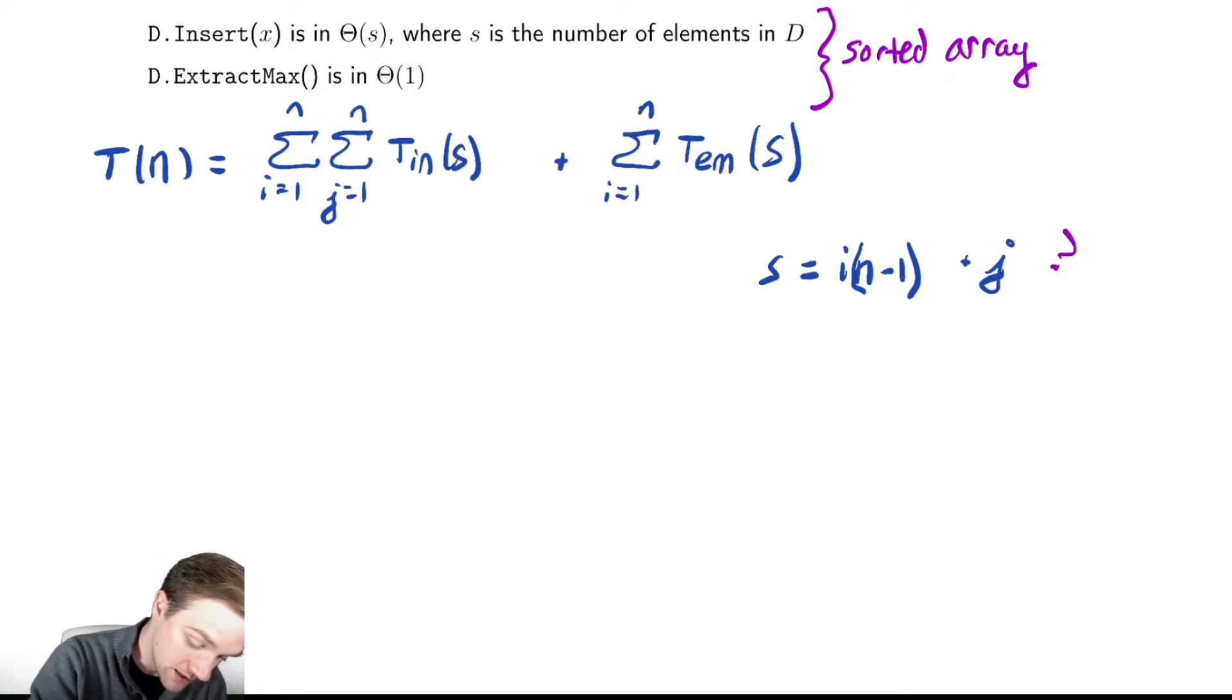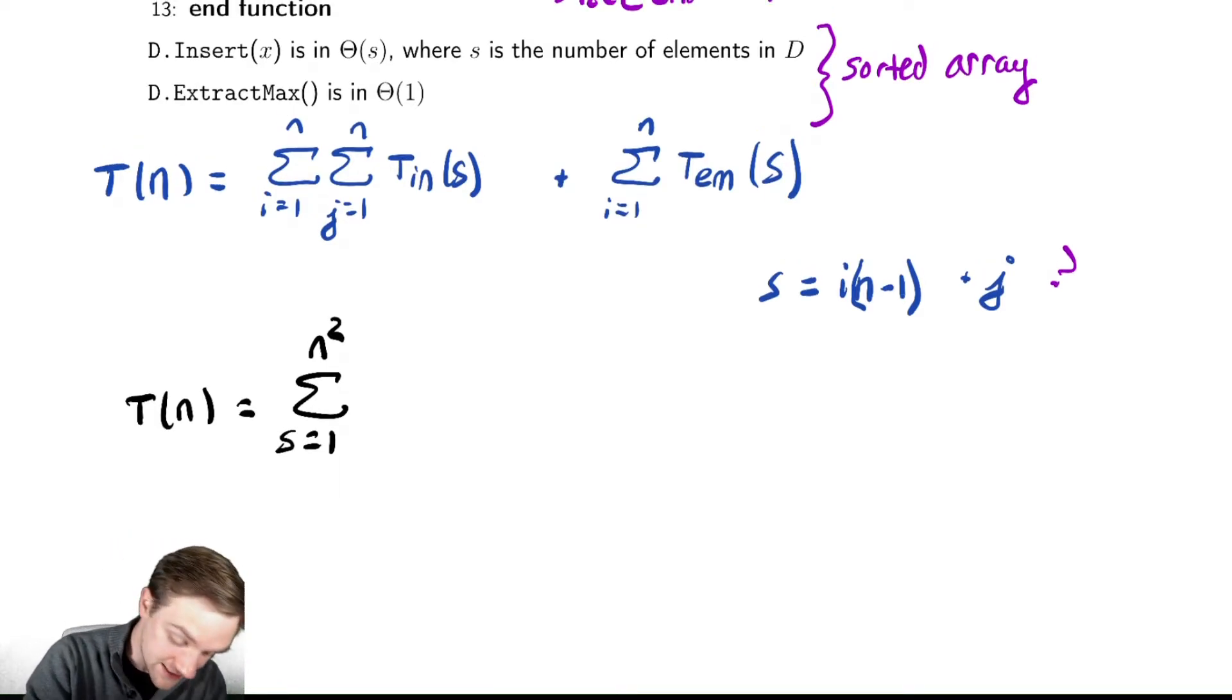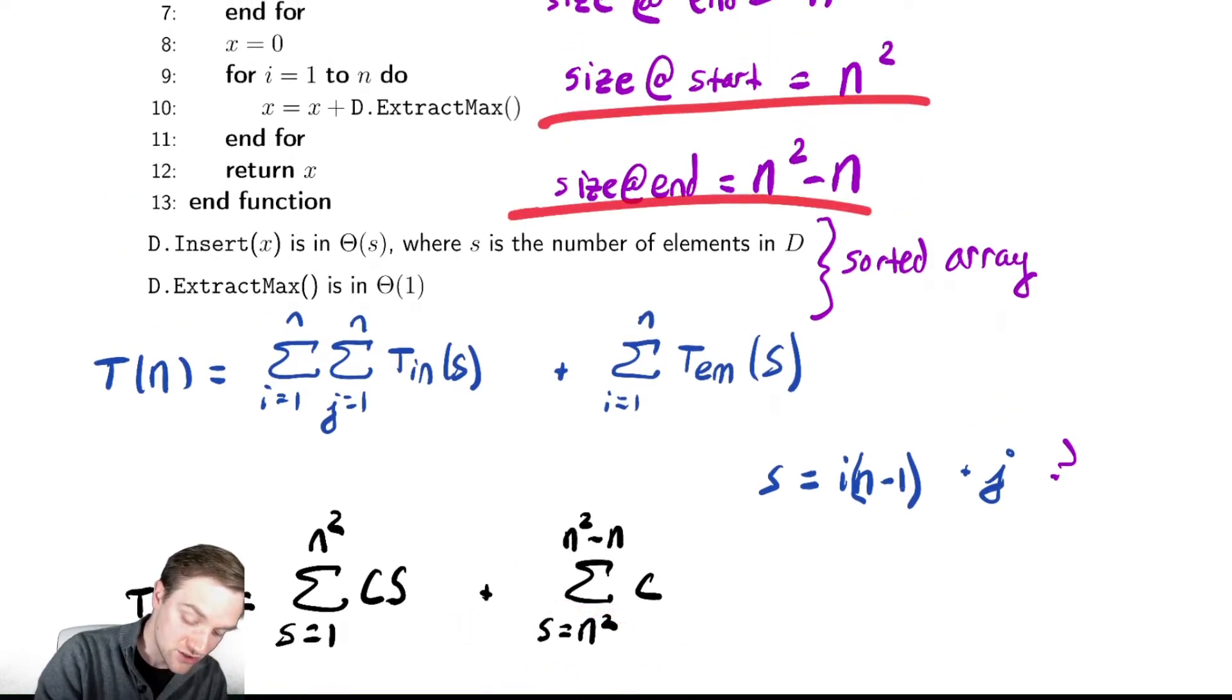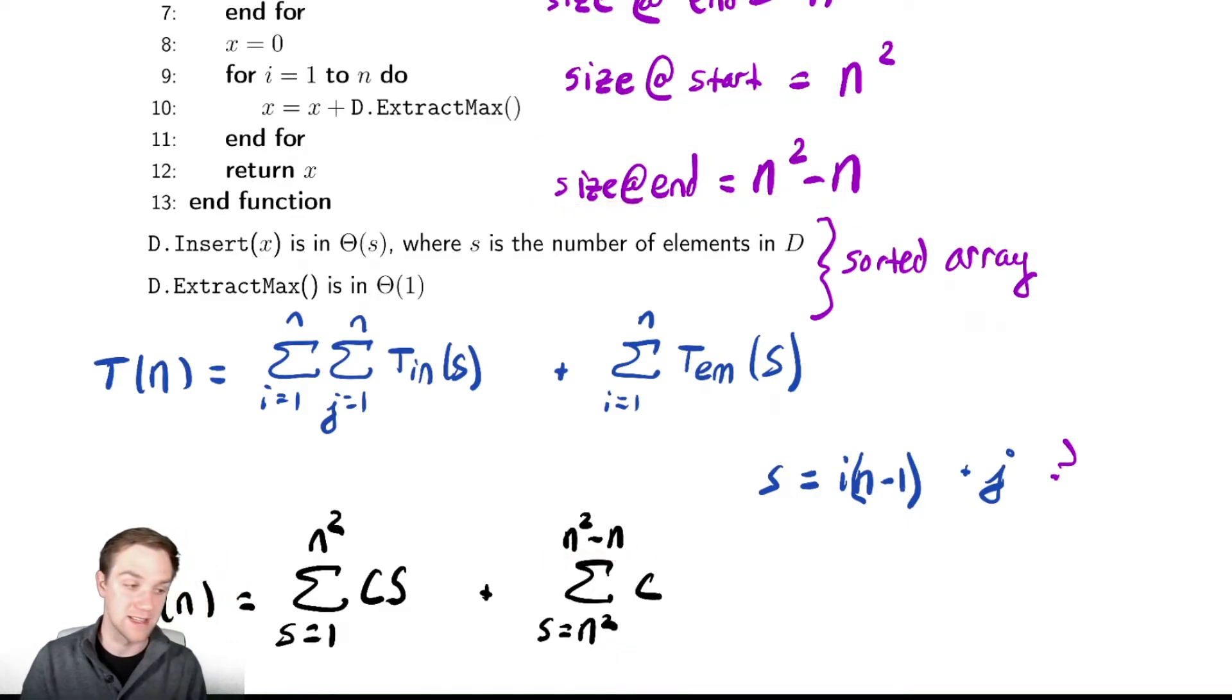So instead of this awkward implementation I mentioned there, why not do T(n) is equal to a singular sum from s equals 1 to n squared of the time it takes to insert. Insert was linear, so this is going to be Cs here, plus the sum from s equals n squared down to n squared minus n of a constant. And notice that our bounds there, the larger bound is on the bottom, I'm just trying to write it as similar to this as I can. Again, it starts at n squared and goes down to n squared minus n.